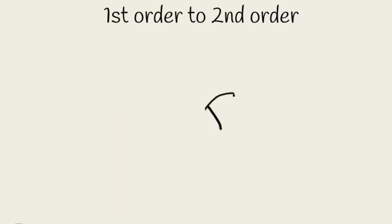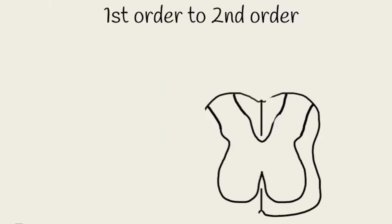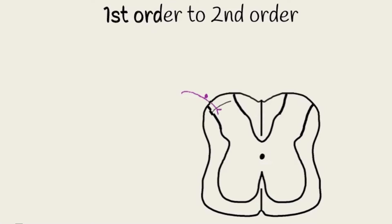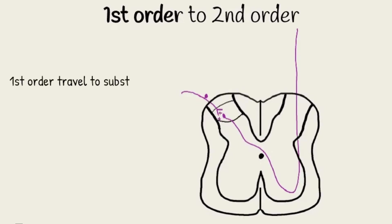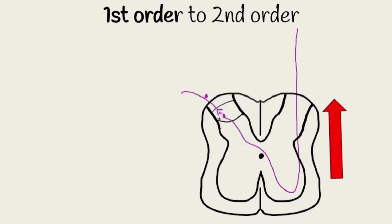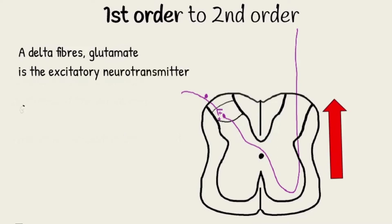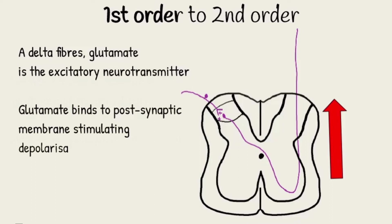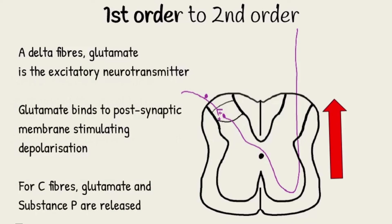Following transmission from the periphery, I will now cover the central transmission processes in pain sensation. The first-order nociceptive fibers travel to the substantia gelatinosa of the dorsal horn, where they synapse with second-order nociceptive neurons in the nociceptive laminae 1 and 2. For A-delta fibers, glutamate is the fast excitatory neurotransmitter of the primary afferent neurons. This glutamate binds to receptors on the postsynaptic membrane of the secondary afferent neuron, stimulating depolarization and ascension of the sensation of pain. For C fibers, both the fast-acting excitatory neurotransmitter glutamate and the slower-acting substance P are also released here, causing central transmission.